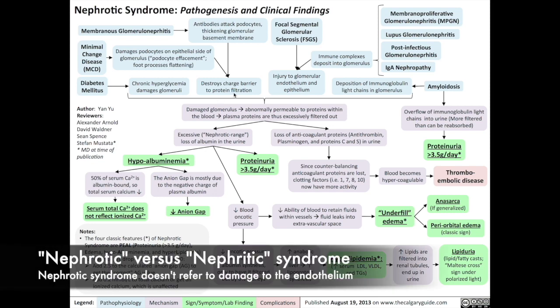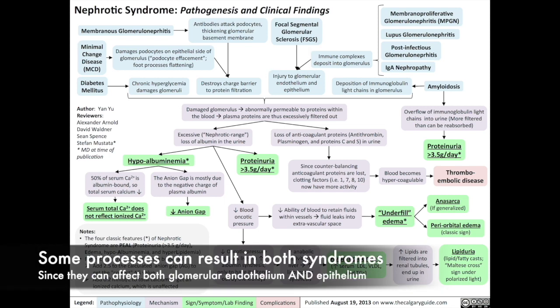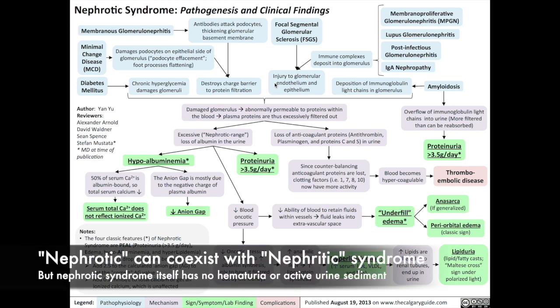Note that nephrotic syndrome does not refer to damage of the endothelium, although some processes like focal segmental glomerular nephritis and immune complex glomerulonephritis can affect both the endothelium and glomerular epithelium. Since nephrotic syndrome does not involve endothelial damage, there is no inflammatory process triggered, and the damaged epithelial pores are still too small for red blood cells to pass through. Therefore, there is no hematuria and no active urine sediment.